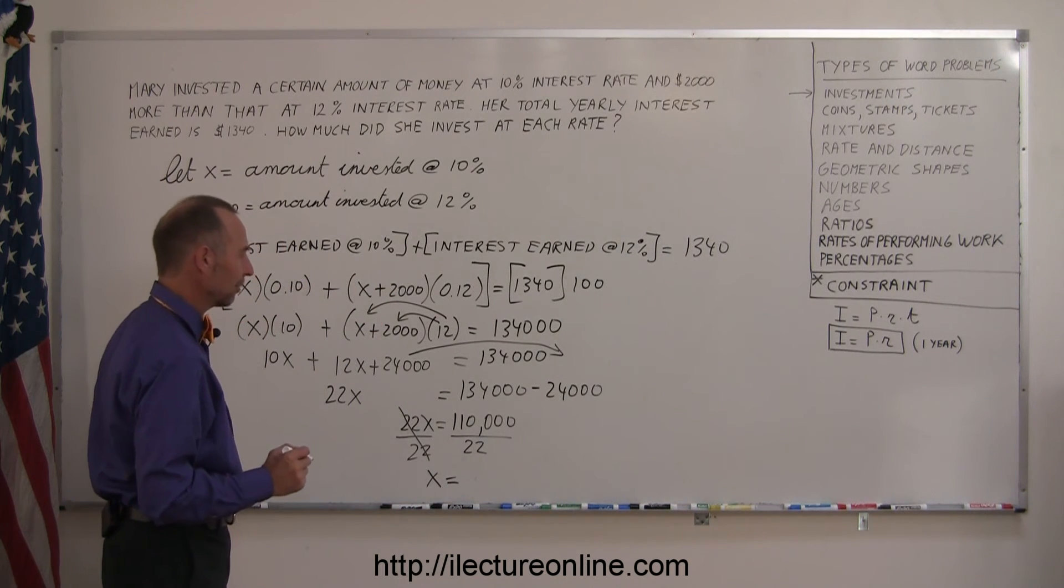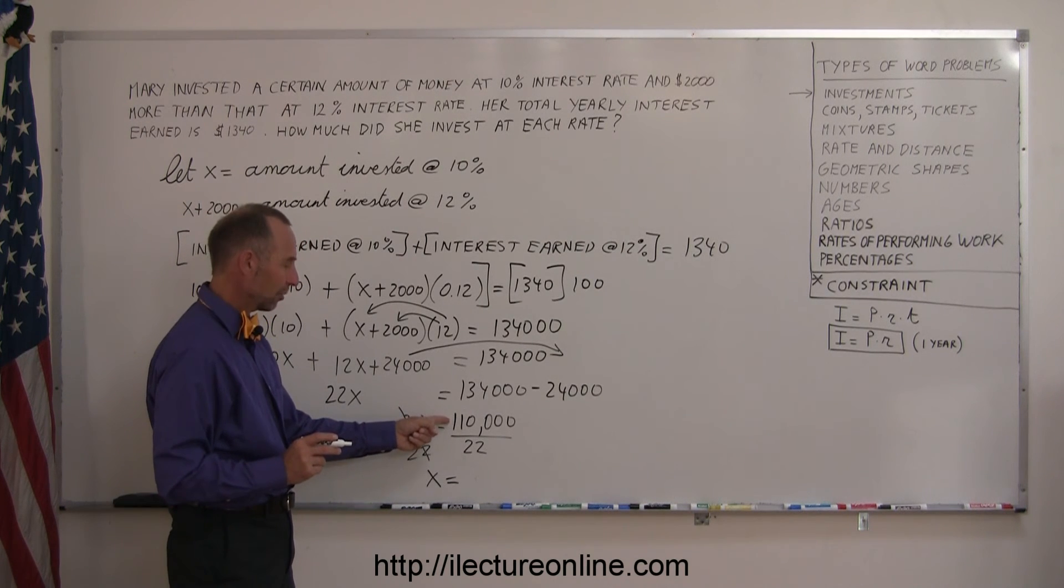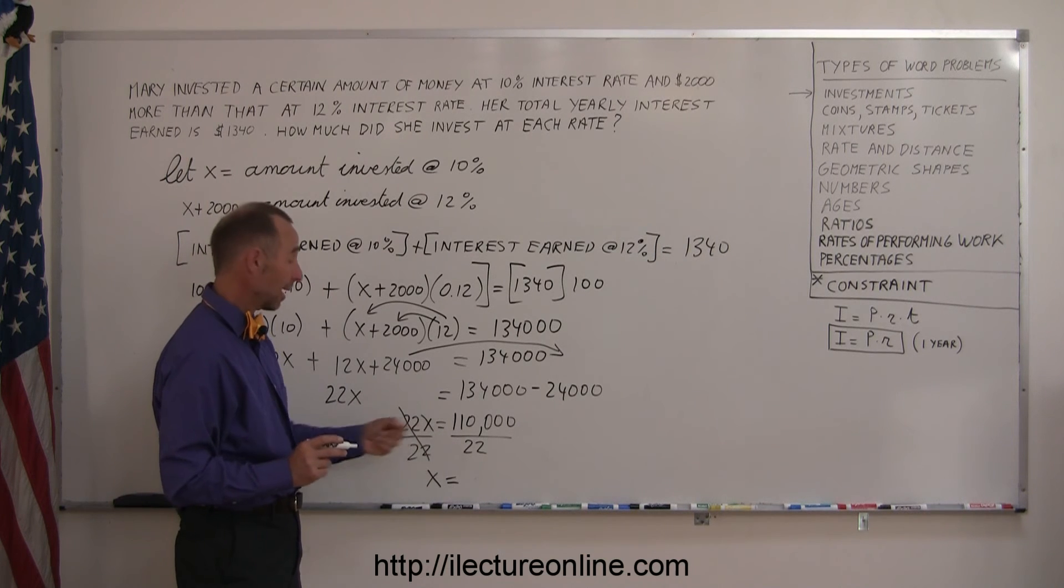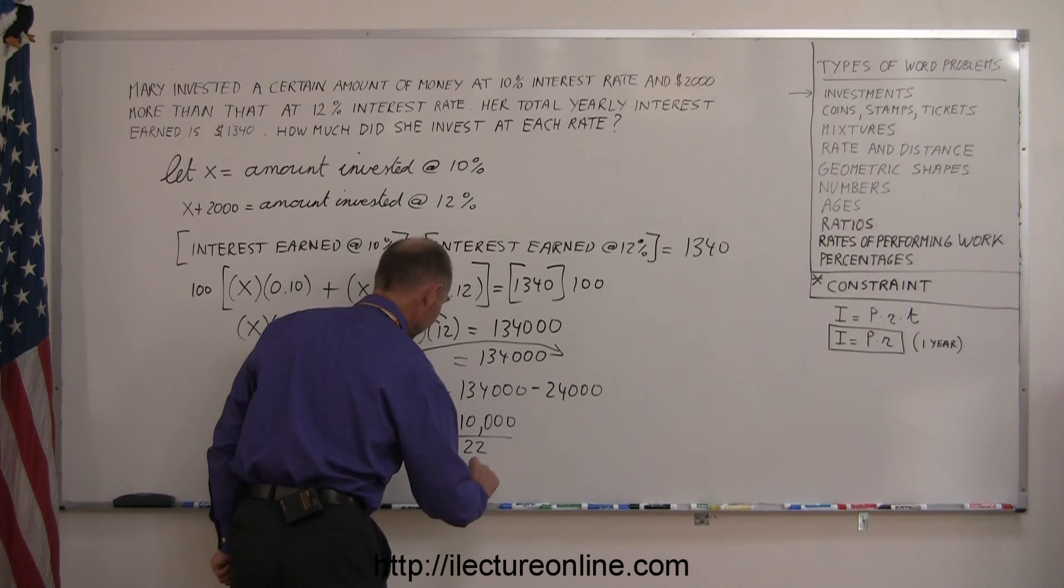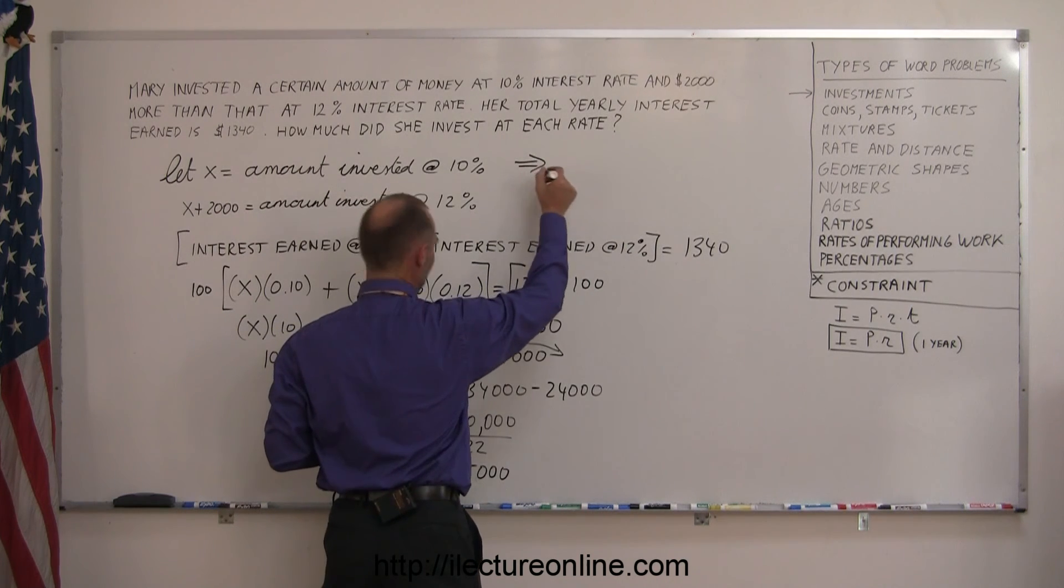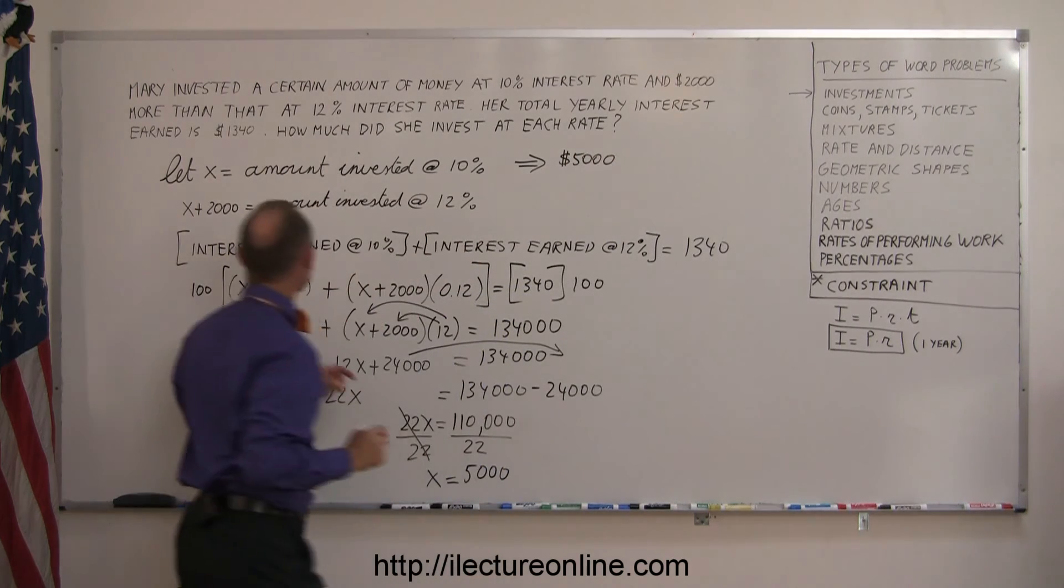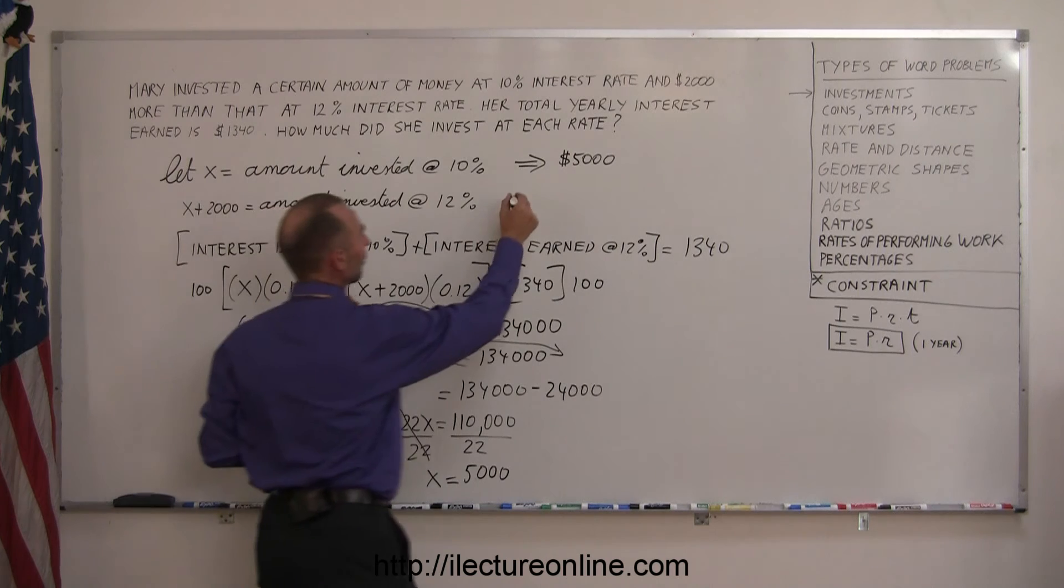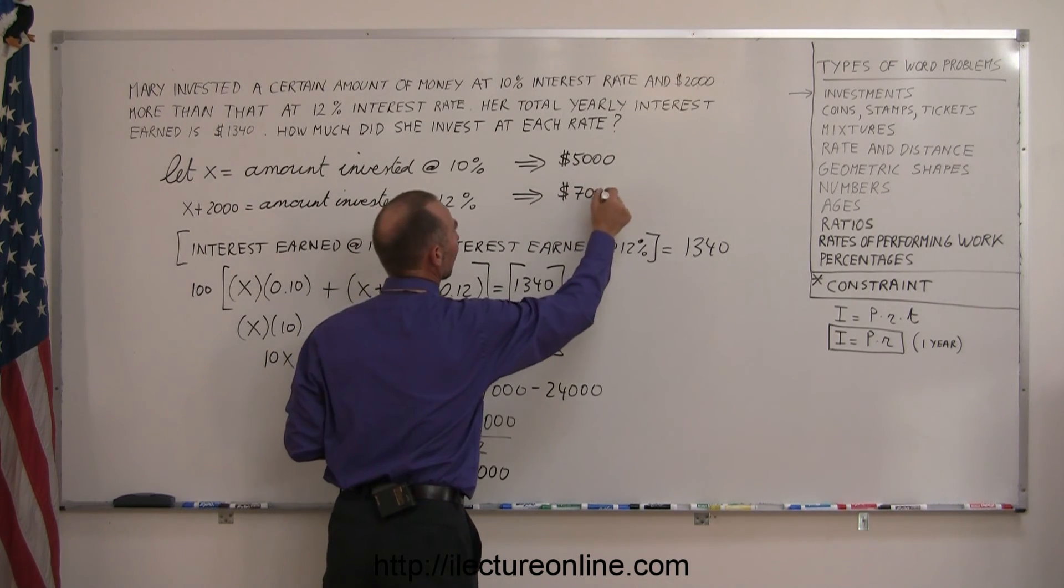Well, if I double this to 220,000 divided by 22, that would give me 10,000. So 110,000 divided by 22 is 5,000. Going back to what I defined, if x is the amount invested at 10%, then x is $5,000. And if I invest $2,000 more at 12%, that means Mary invested $7,000 at 12%.